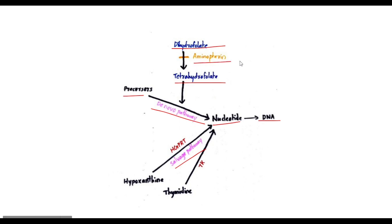There is an inhibitor called aminopterin. Aminopterin blocks the conversion of dihydrofolate to tetrahydrofolate, inhibiting the de novo pathway.